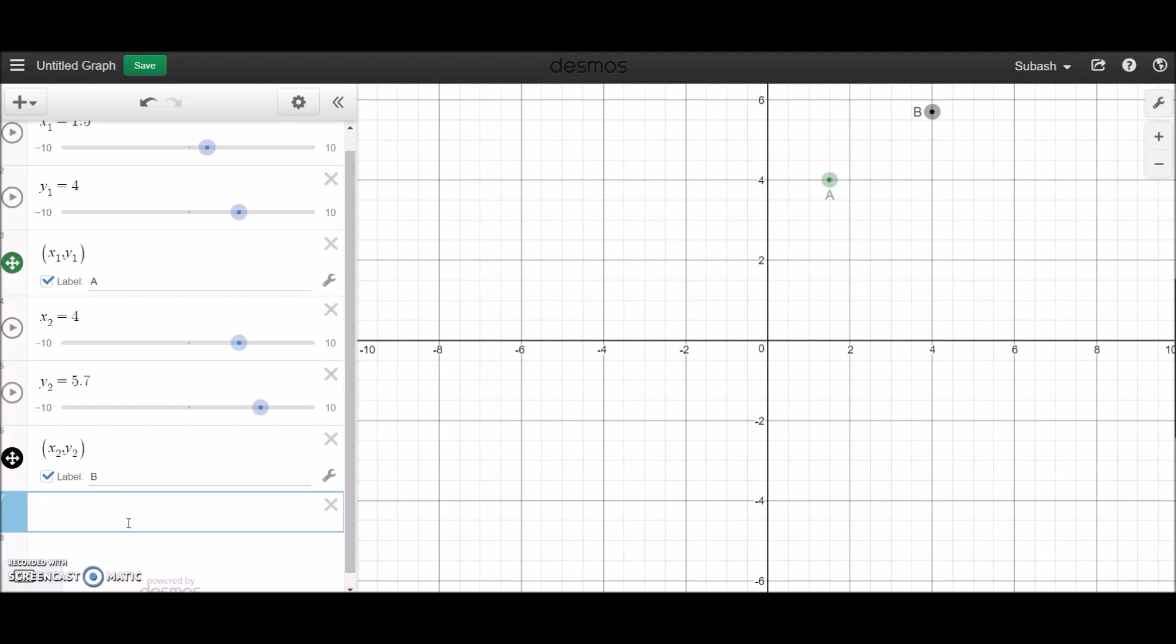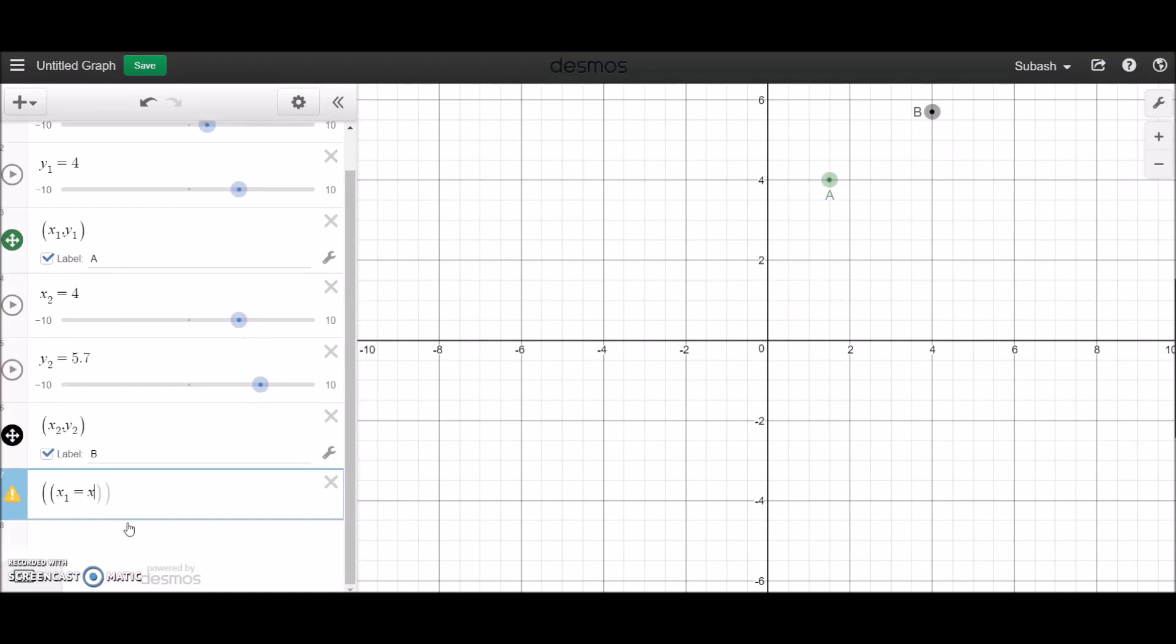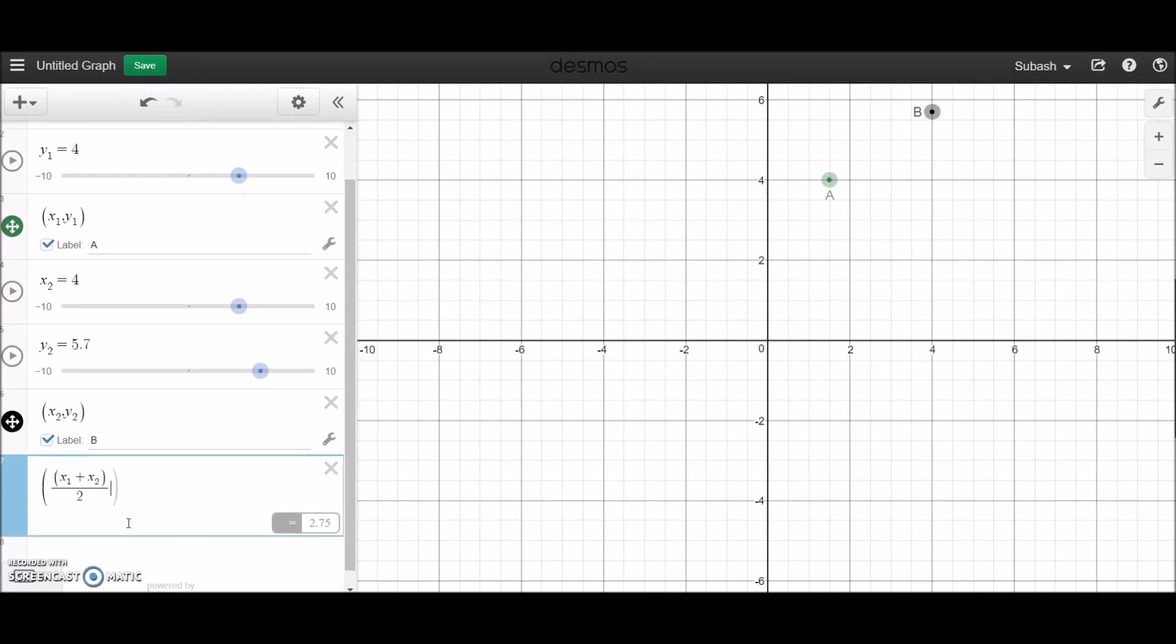So first up I'm going to add up two x values and divide that by 2, and then I'm going to write that straight up as a coordinate. So I'm going to have it as comma, then y1 plus y2 divided by 2. And as you can see the red point right now here is the midpoint between A and B.